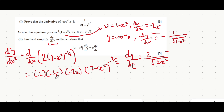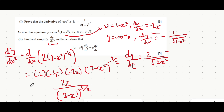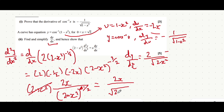2 times minus a half is minus 1, and minus 1 times minus 2x is positive 2x. The negative in the power means it goes to the denominator, so we have 2x over (2 minus x²) to the power of 3 over 2 — that's your d²y/dx². If you multiply (2 minus x²) onto that, one power of (2 minus x²) cancels, leaving 2x over the square root of (2 minus x²), which is x multiplied by dy/dx.